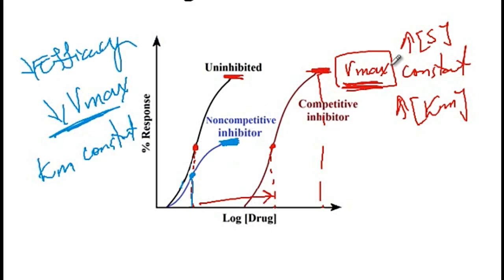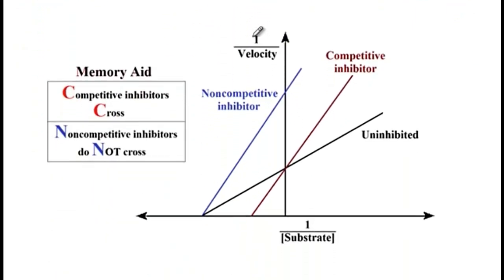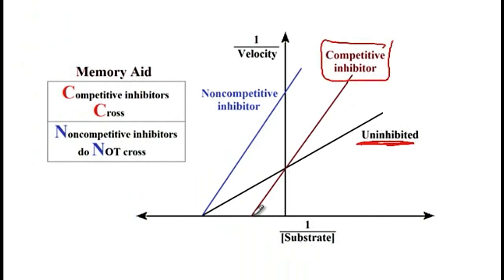With the competitive inhibitor, Vmax is maintained; however, we need a higher concentration of substrate, so there is decreased potency. Another way this may be presented on an exam is as a 1/velocity versus 1/substrate plot (Lineweaver-Burk). As a memory aid: the competitive inhibitor line crosses the uninhibited black line, while the non-competitive inhibitor line does not cross it.